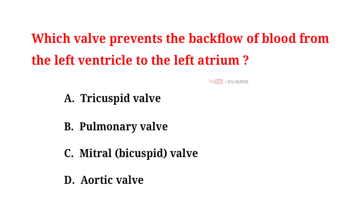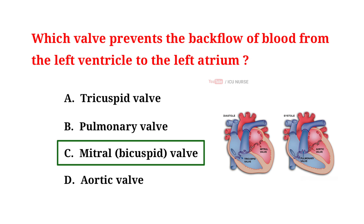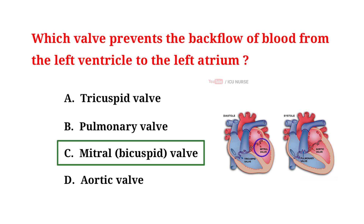Which valve prevents the backflow of blood from the left ventricle to the left atrium? A. Tricuspid valve. B. Pulmonary valve. C. Mitral valve. D. Aortic valve. And the correct answer is C. Mitral valve. The valve that prevents the backflow of blood from the left ventricle to the left atrium is the mitral valve, also known as the bicuspid valve. It is located between the left atrium and the left ventricle, ensuring that blood flows in one direction during the cardiac cycle.